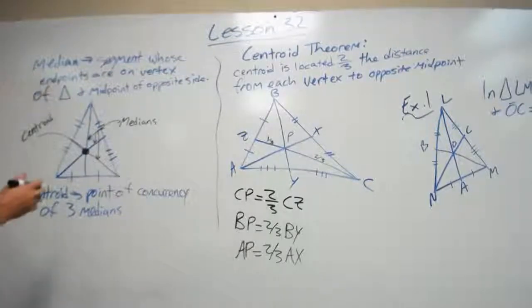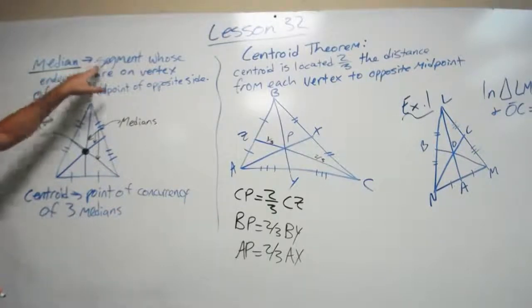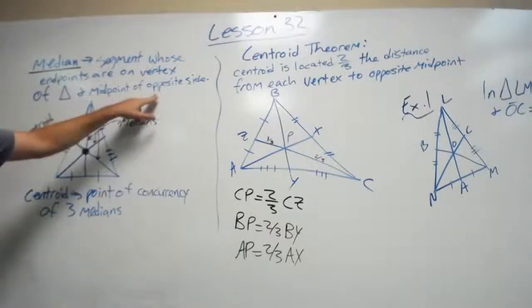The first definition is median. What is a median? Well, a median is a segment in a triangle whose endpoints are on a vertex of a triangle and midpoint of opposite sides.